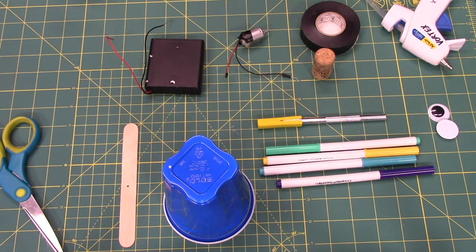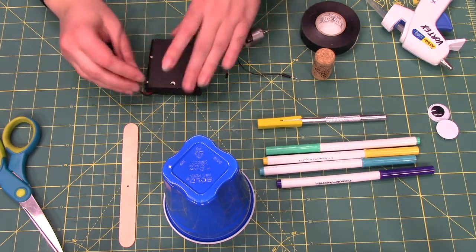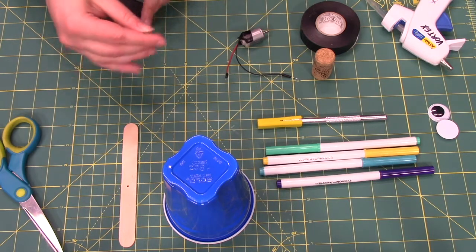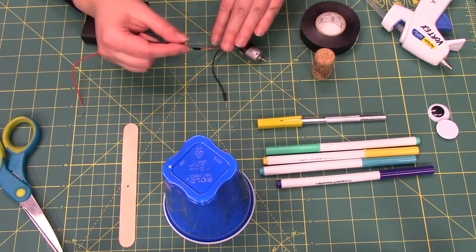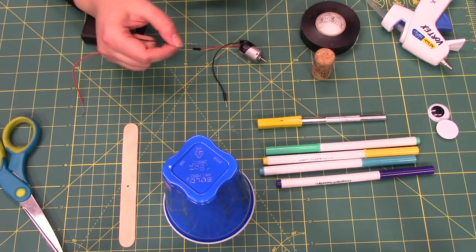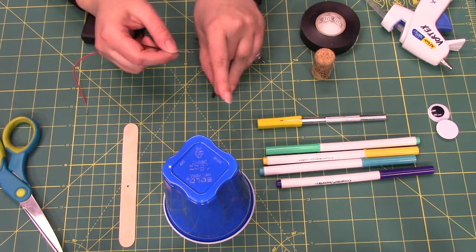So the first step that I'm going to do is I'm actually going to connect the motor to the battery pack. It doesn't matter which order you do the wires in because if you do it the opposite way it'll turn either clockwise or counterclockwise just by switching the wires.